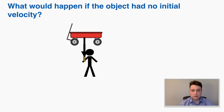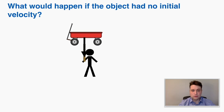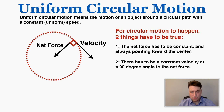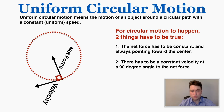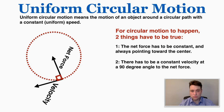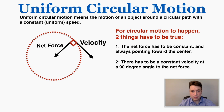This shows that there are two requirements for circular motion. The first requirement is that the net force has to be constant and always pointing toward the center of the circular path. The second requirement is that there has to be a constant velocity at a 90-degree angle to the net force itself. This picture on the left shows what I mean — both of these things have to be true for circular motion to occur.